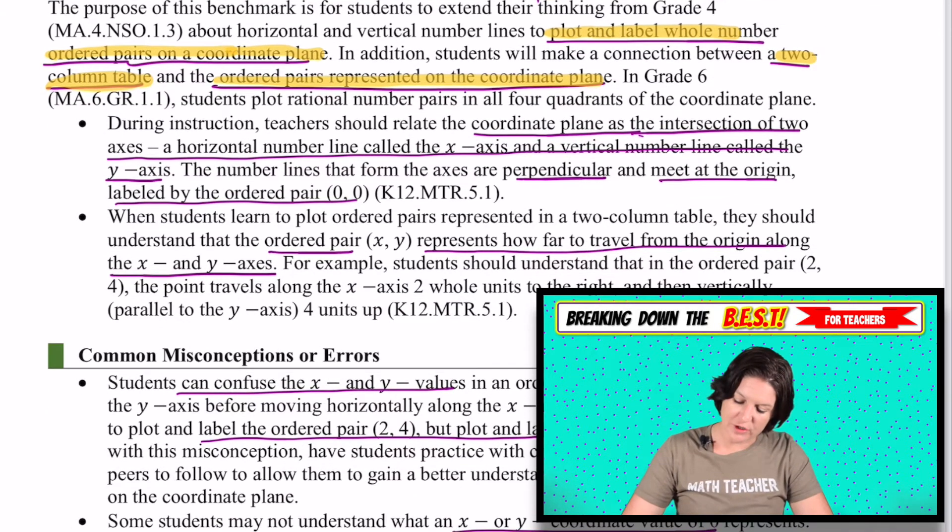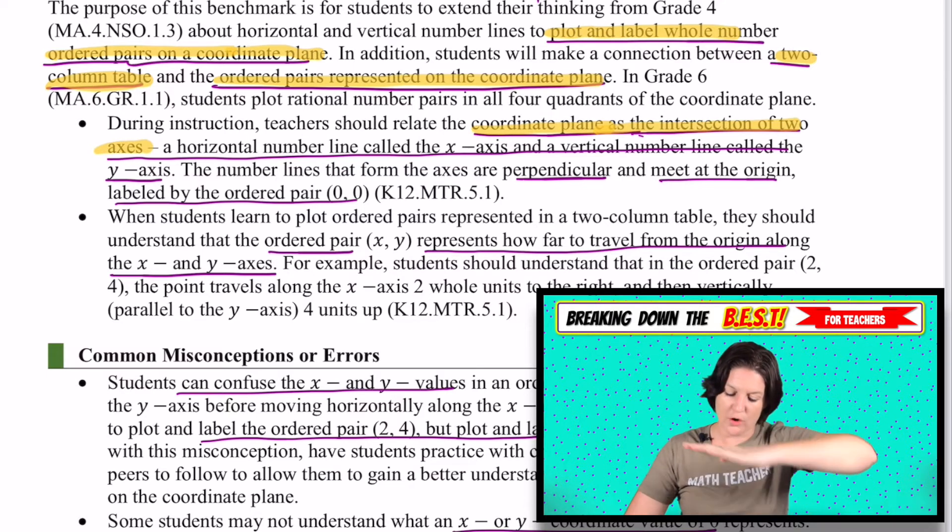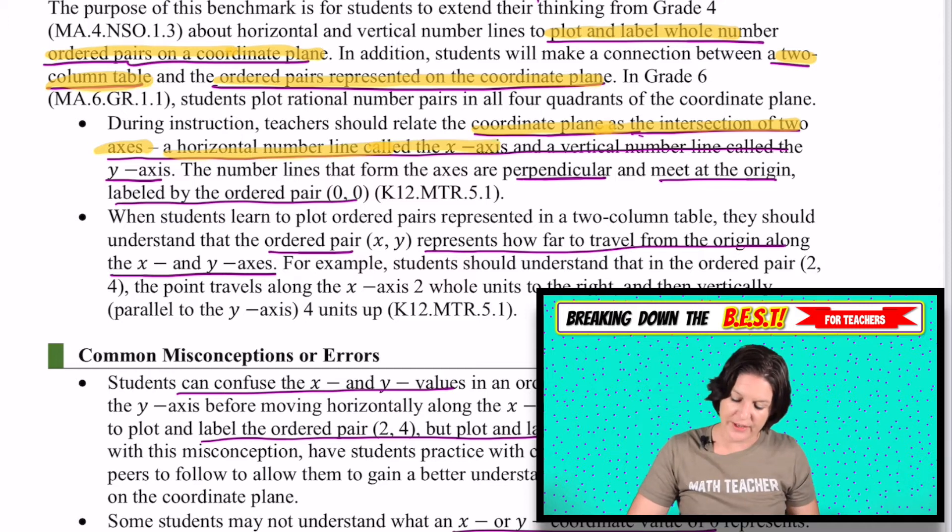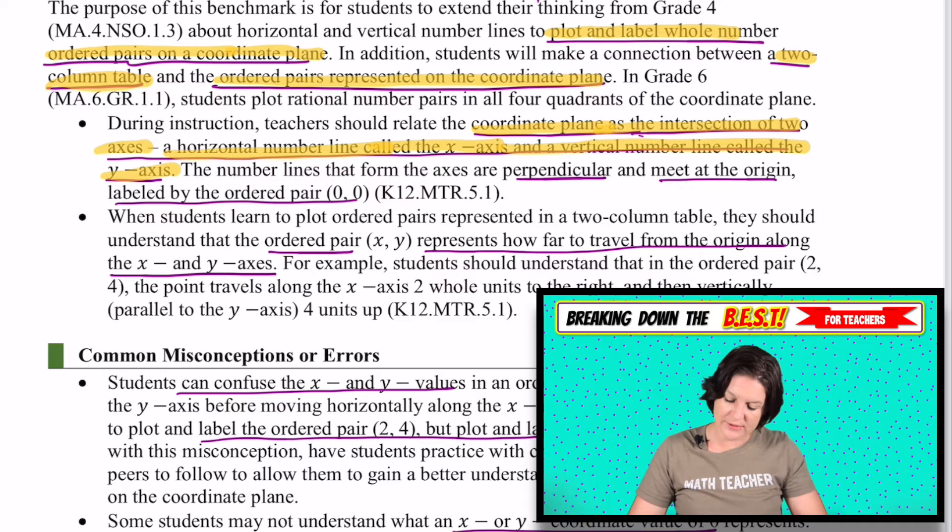And the order pairs represented on the coordinate plane here. I like this, that it's kind of describing it, that the coordinate plane can be described as the intersection of two axes, the horizontal number line called the x-axis and the vertical number line called the y-axis.